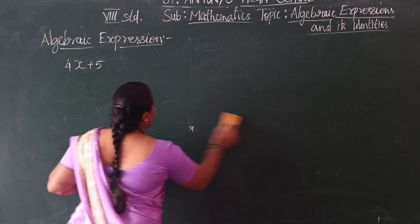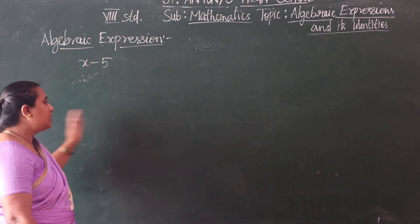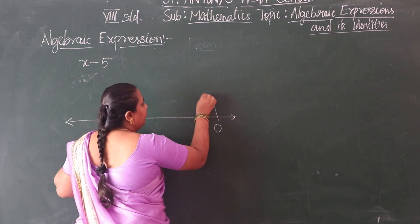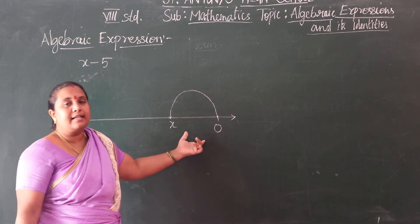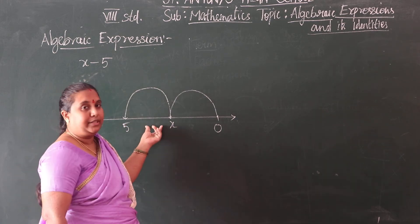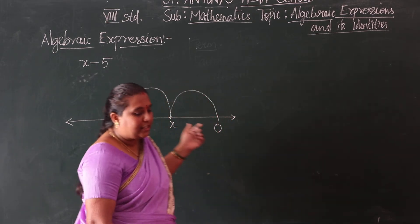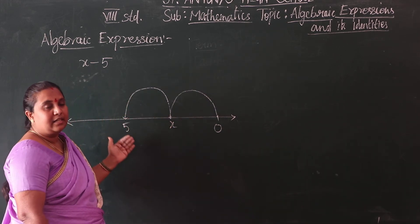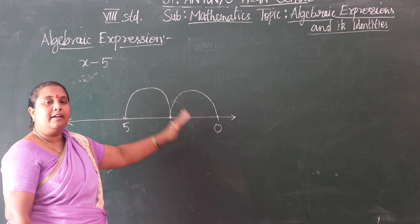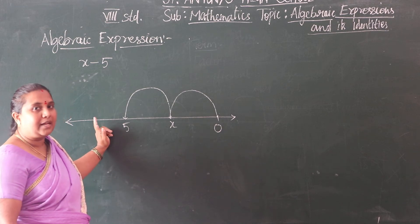Now let us take the subtraction side. We have the algebraic expression x minus 5. Subtraction goes to the left of the number line. Take 0 here — from here we can take x, so this is x, and minus 5 moves to the left. The value of x minus 5 will be 5 units to the left of x. In addition, we add to the right of x; in subtraction, the units move to the left of x.